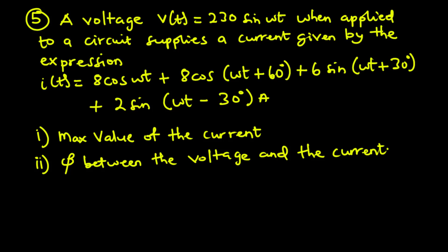In question 5, we have a voltage V(t) = 230 sin(ωt) applied to a circuit, which supplies a current i(t) = 8 cos(ωt) + 8 cos(ωt + 60°) + 6 sin(ωt + 30°) + 2 sin(ωt − 30°). We are asked to find the maximum value of the current and the phase angle between the voltage and the current.